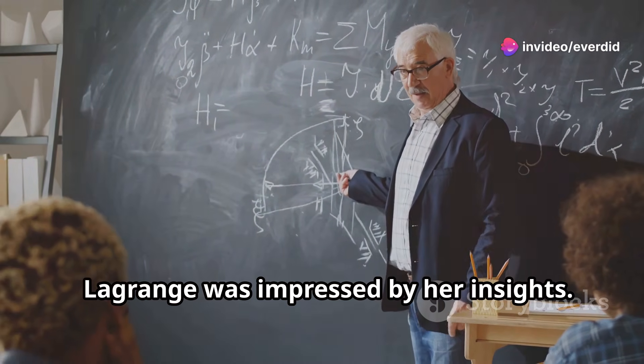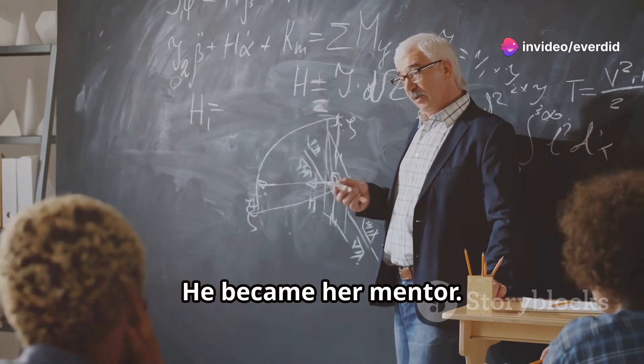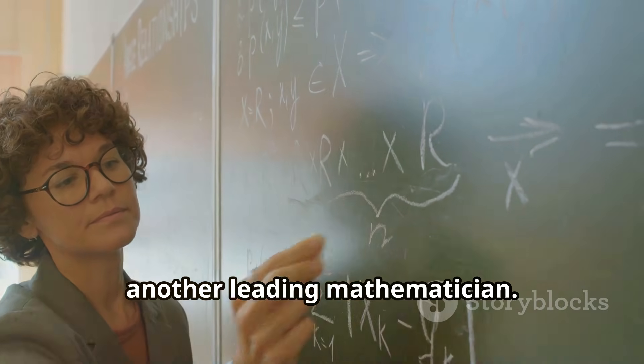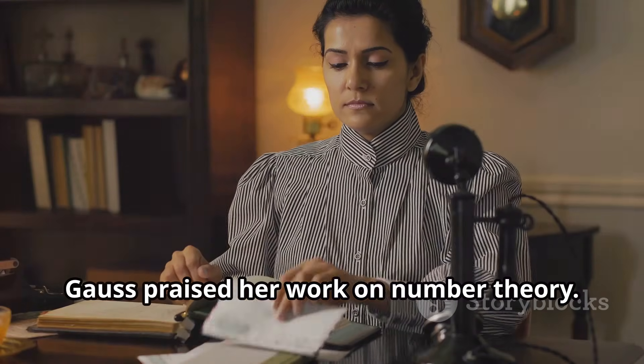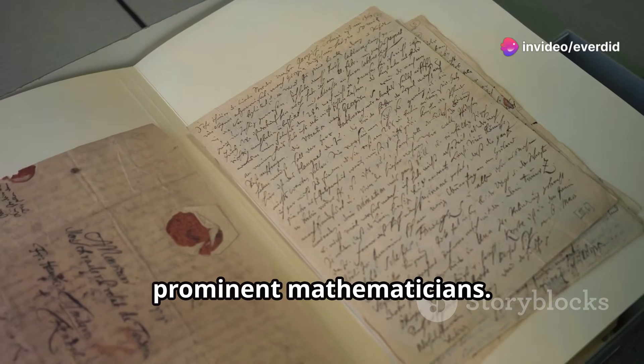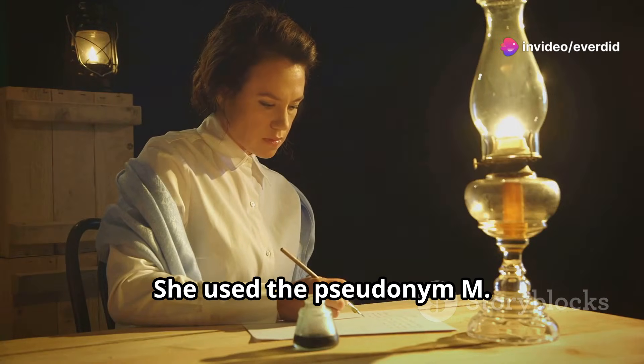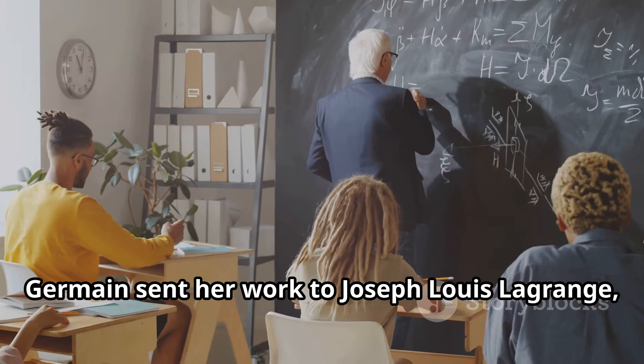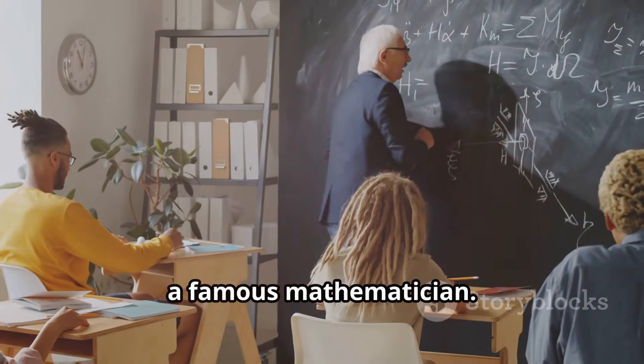Lagrange was impressed by her insights and became her mentor. Germain also corresponded with Carl Friedrich Gauss, another leading mathematician. Gauss praised her work on number theory. She used the pseudonym Monsieur LeBlanc to hide her identity. Germain sent her work to Joseph Louis Lagrange, a famous mathematician.